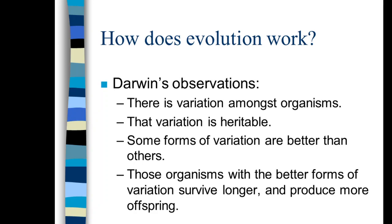Everyone, when they think of Darwin, thinks of evolution. It's important to remember that Darwin is not famous because of his theory of evolution — Darwin is famous because he figured out how evolution worked. There were lots of different theories for evolution at the time. For example, Jean-Baptiste Lamarck had a theory that evolution was via acquired characteristics, explaining giraffes' long necks by their constant striving to reach higher leaves. We now know that's not correct.